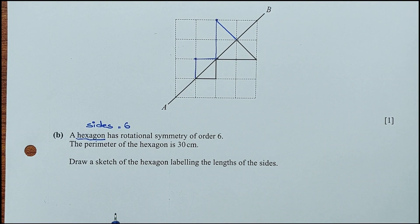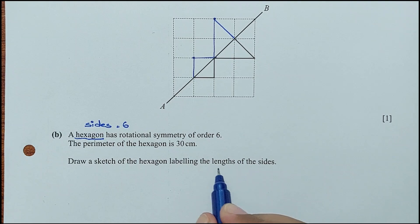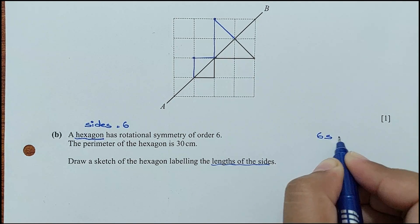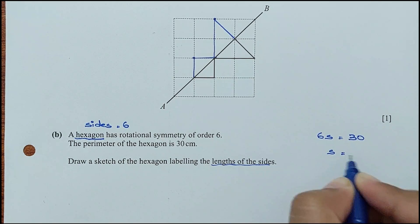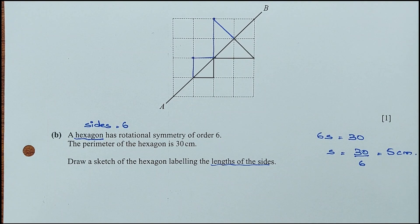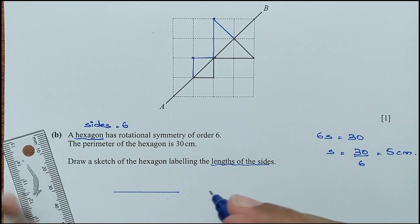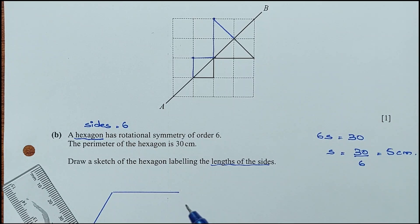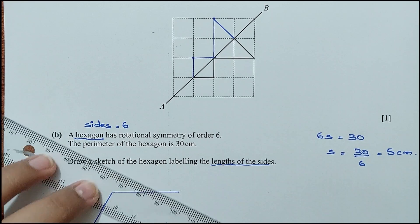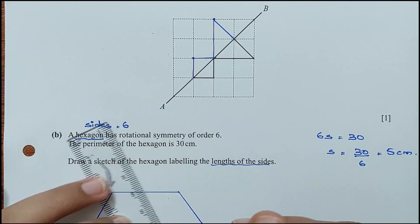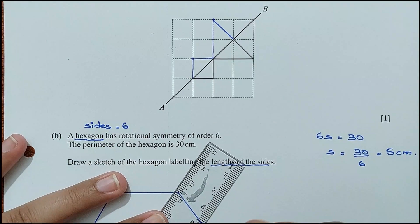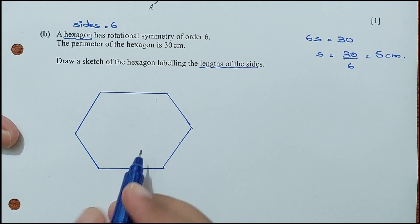The perimeter of the hexagon is 30 centimeters. The perimeter is the sum of all 6 sides equal to 30, so each side is 30 ÷ 6 = 5 centimeters. Drawing a sketch of the hexagon with all sides labeled 5 cm.